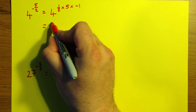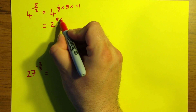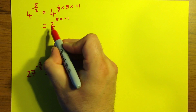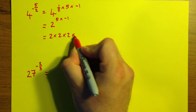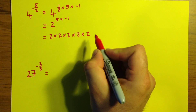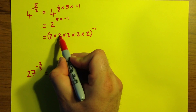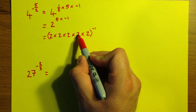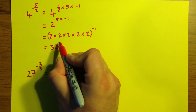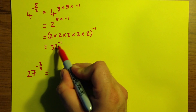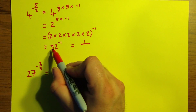So 4 to the power of a half is 2, because the power of a half means square root. We've still got the power of 5 to deal with, and the negative 1. So 2 to the power of 5 means 2 multiplied by 2, by 2, by 2, by 2, and we raise all of that to the power of negative 1. So 2 times 2 is 4, times 2 is 8, times 2 is 16, times 2 is 32 — so we've got 32 to the power of negative 1. The power of negative 1 just means 1 over 32.